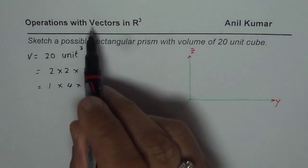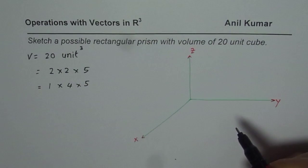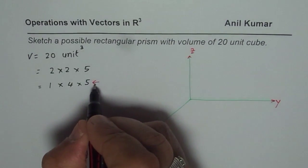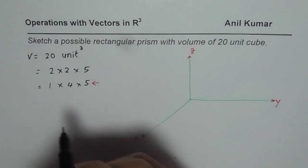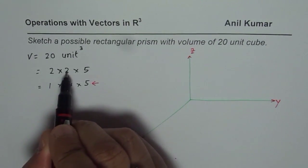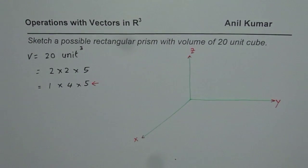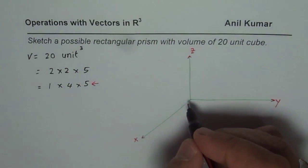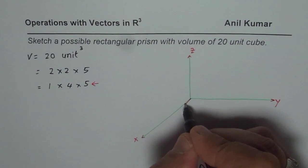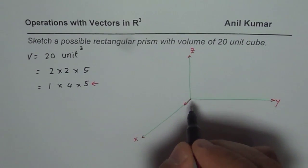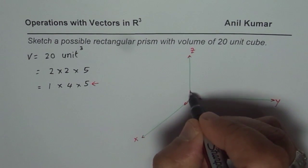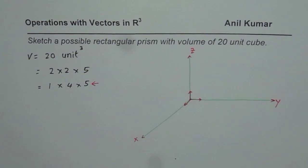I'll sketch the one with dimensions 1, 4, and 5 — you can practice the one with 2, 2, and 5. We have unit vectors: i along the x-axis, j along y, and k along z. These are my unit vectors i, j, and k.